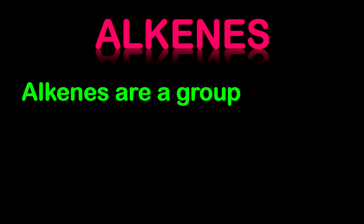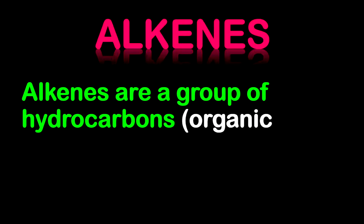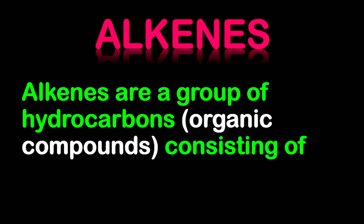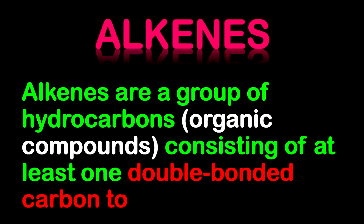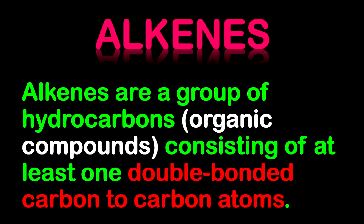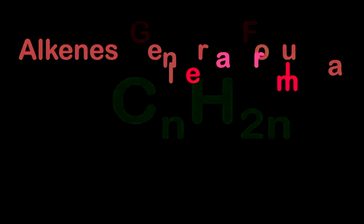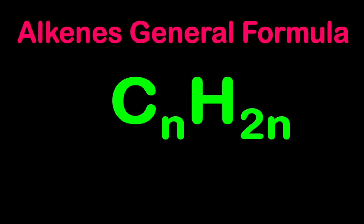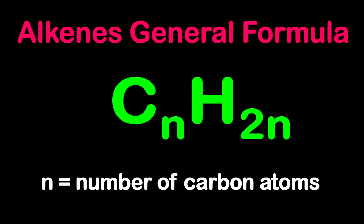Alkenes are classified as a group of hydrocarbons or organic compounds consisting of at least one double-bonded carbon to carbon. The general formula for alkenes is CnH2n, where n represents the number of carbon atoms.